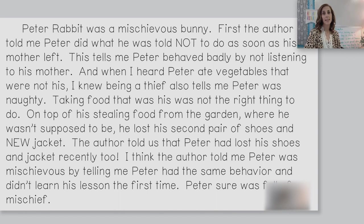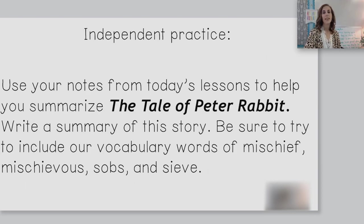Now you've reread the text and understand the words. You have made notes on vocabulary words, major events in the story, and clues to Peter's character. Now you will use those notes to write a summary of The Tale of Peter Rabbit. Take out your last sheet of paper and a pencil. Write at the top: Summary of The Tale of Peter Rabbit. In your summary, be sure to include key details and vocabulary words: mischief, mischievous, sobs, and sieve. I enjoyed working with you on learning about mischievous Peter Rabbit and looking for character traits today. Thank you for inviting me into your home. I look forward to seeing you in our next lesson in Tennessee's at-home learning series. Goodbye!